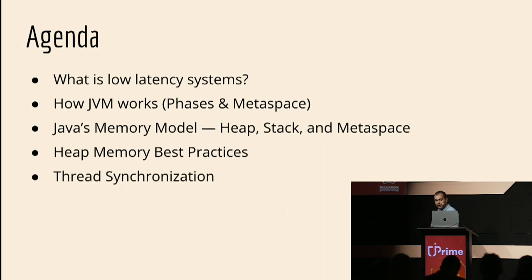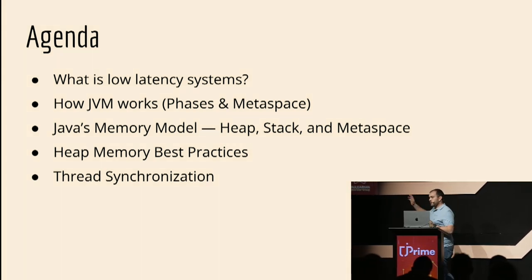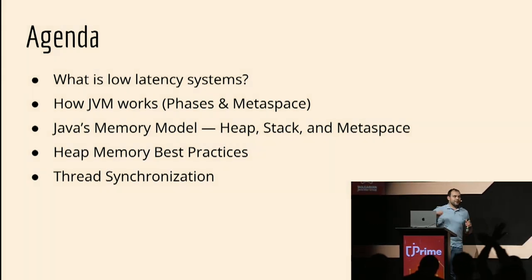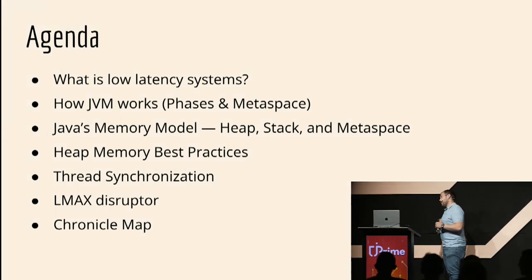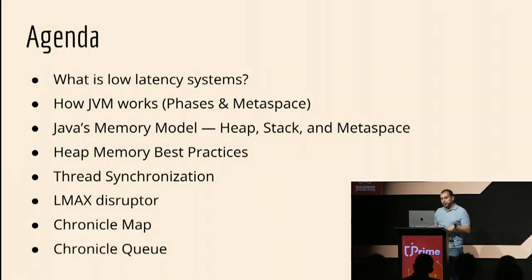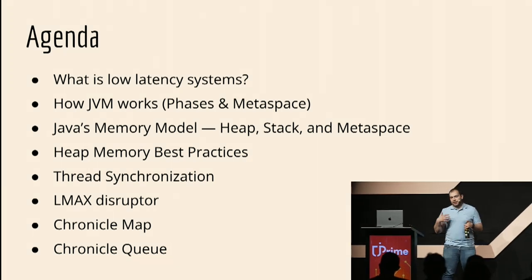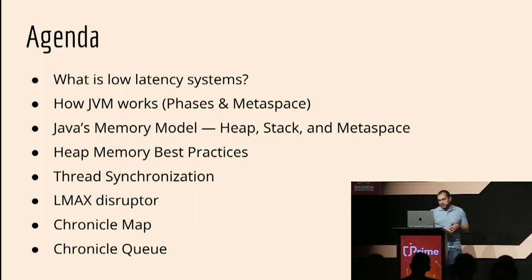We need to understand that and start caring about it if you want to use Java for low latency systems. The next thing is the Java memory model. Yesterday there was an amazing presentation about out-of-memory errors. We are going to speak about that and use almost the same slides, but understand them in scope of low latency. After that, we'll move to heap memory best practices — what techniques we can use to not create so much garbage. Then thread synchronizations, LMAX Disruptor, and open source tools like Chronicle Map and Chronicle Queue, which are part of OpenHFT.